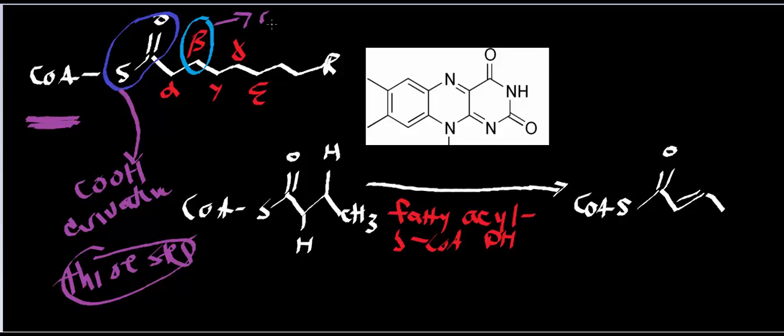This is the carbon that gets oxidized. This is where the term beta-oxidation comes from, because ultimately this is the carbon that continues to get oxidized more and more. It's first going to get oxidized into an alkene, then into an alcohol, and then finally into a ketone. The very first enzyme in beta-oxidation is catalyzed by an enzyme called fatty acyl-CoA dehydrogenase.